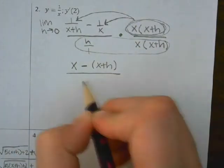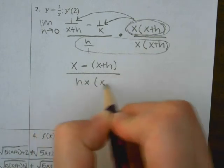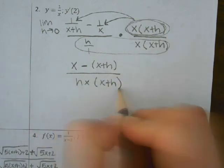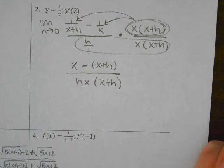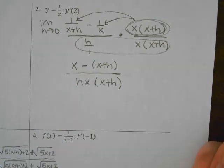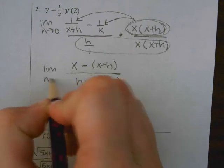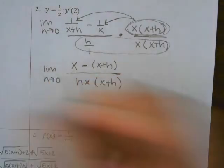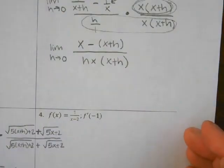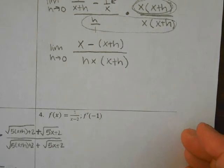And then when we multiply the bottom, what do we get? h times (x+h). So on the bottom, we get the whole thing. And what am I missing? Limit notation.